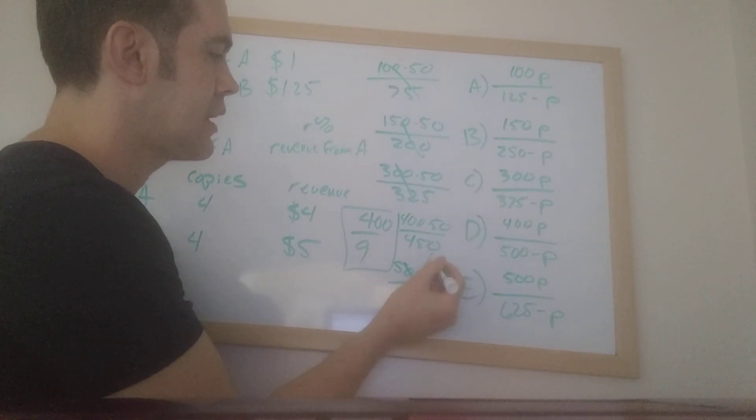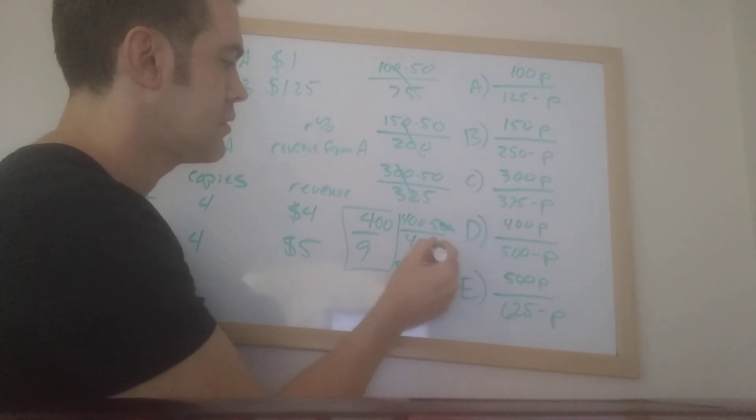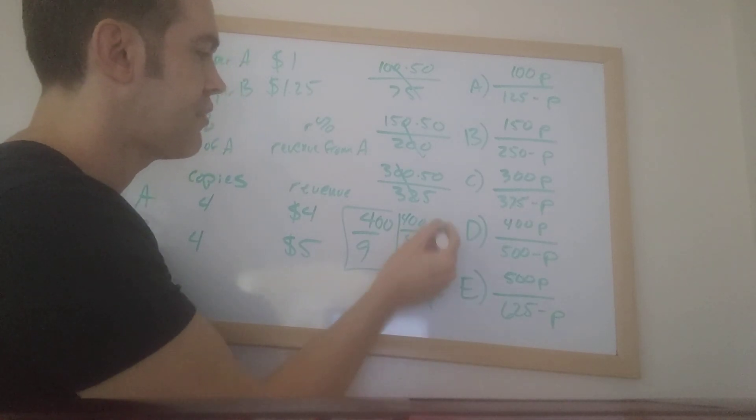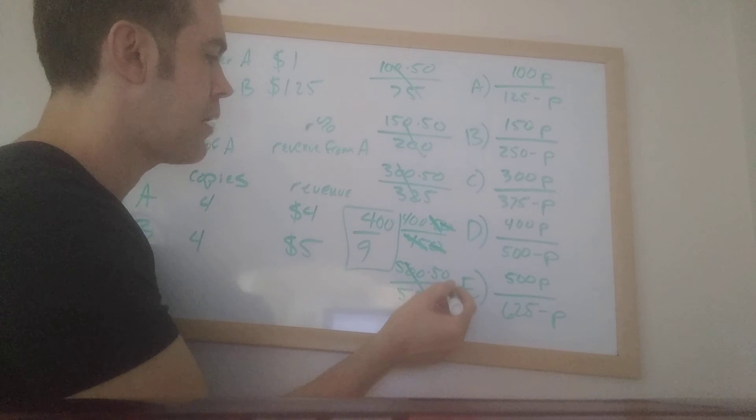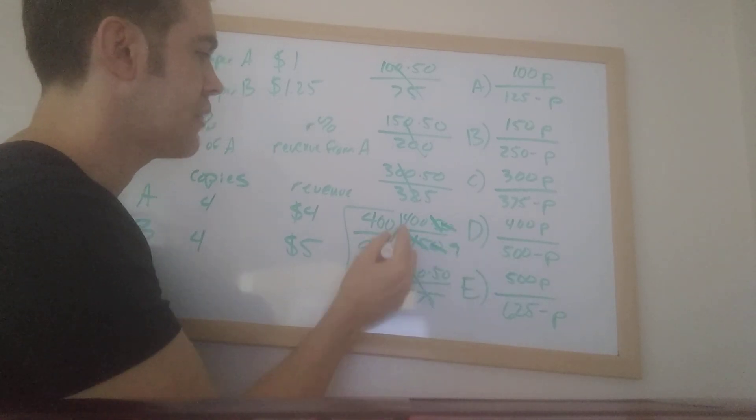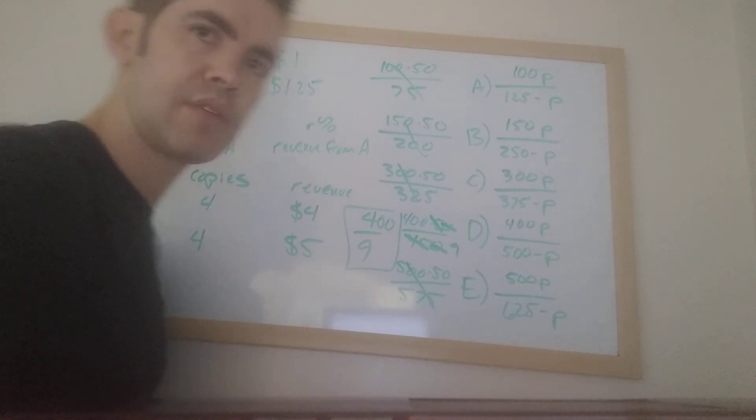Let's just double check. I'm going to cancel everything. I see a 0 here and a 0 here. I see a 5 here and a 45. If I divide by 5 on the top and the bottom, this turns into a 9. And look, I've got 400 over 9. So that's the answer.